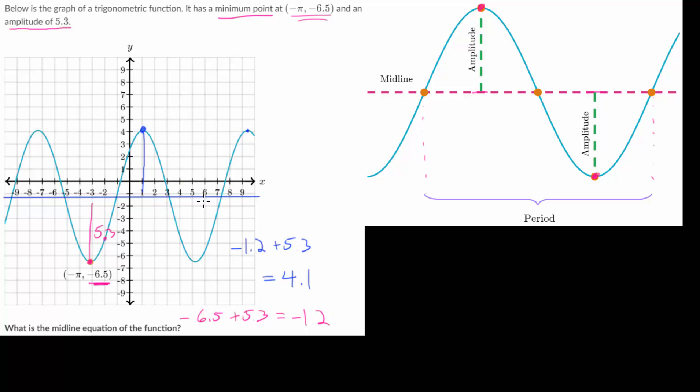So this midline does make sense. But the key idea is that the midline is exactly in the middle of both the maximum and the minimum points and that the amplitude is the distance that goes from that midline to either the maximum or to the minimum point.